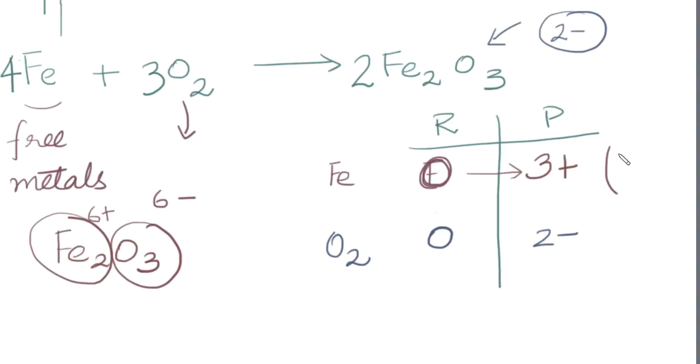Remember that losing electrons makes you positive. So this is an oxidation. And going from 0 to 2- is gaining electrons, which must be reduction. Does that make sense?